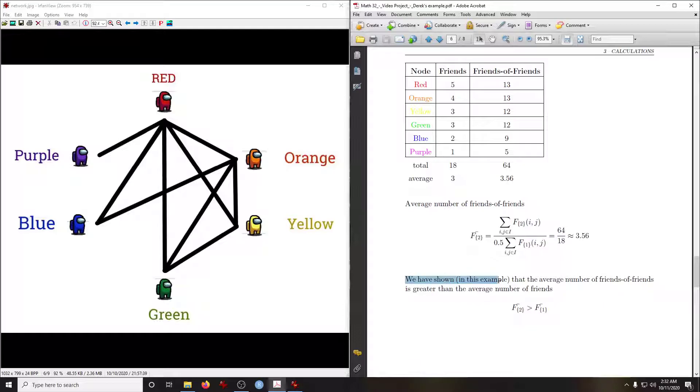We have shown, at least in this example, that the average number of friends of friends is greater than the average number of friends. And hence that's the friendship paradox.